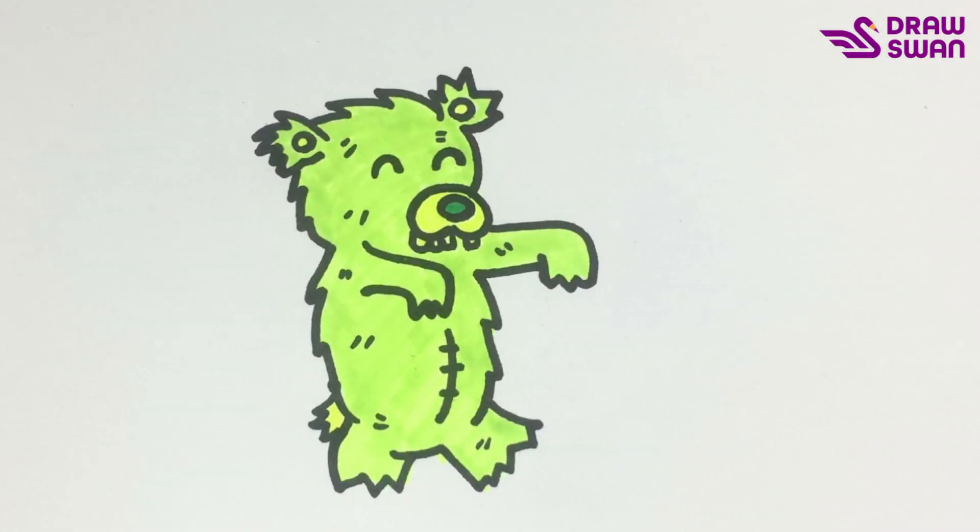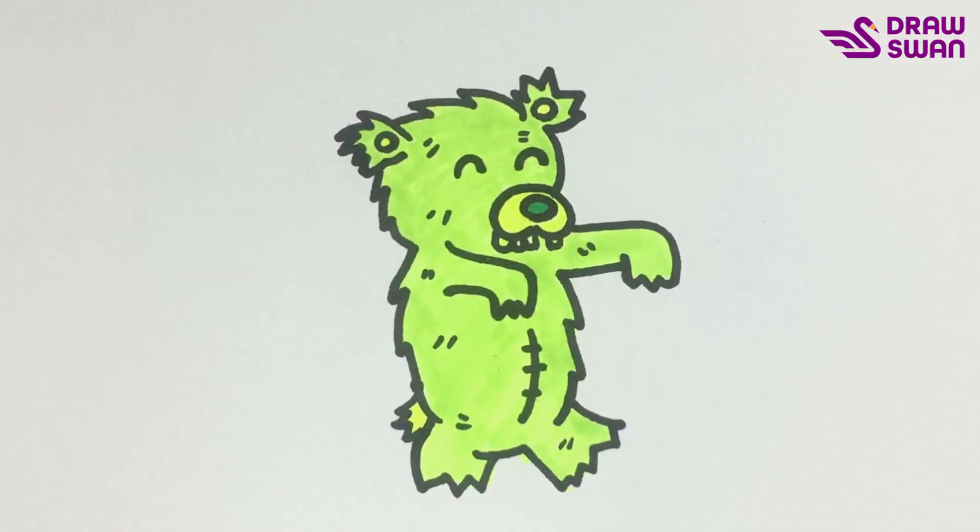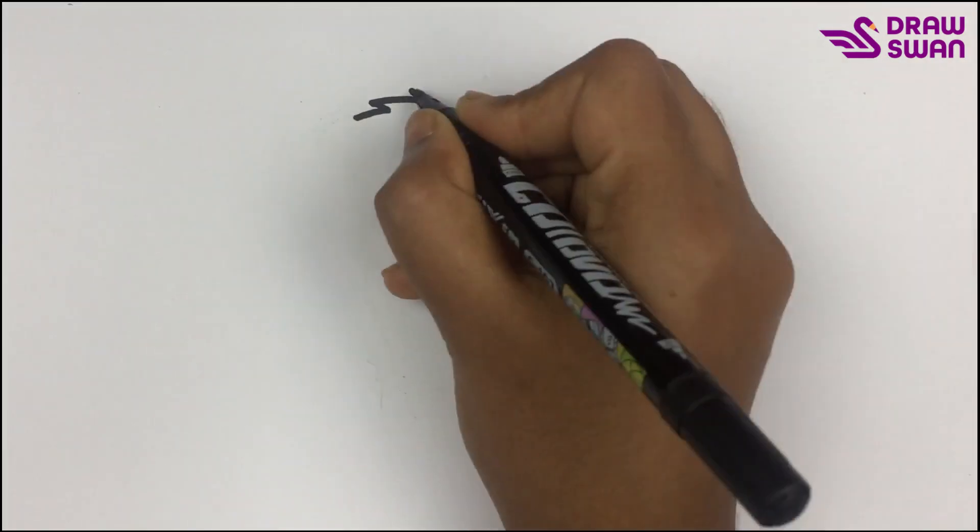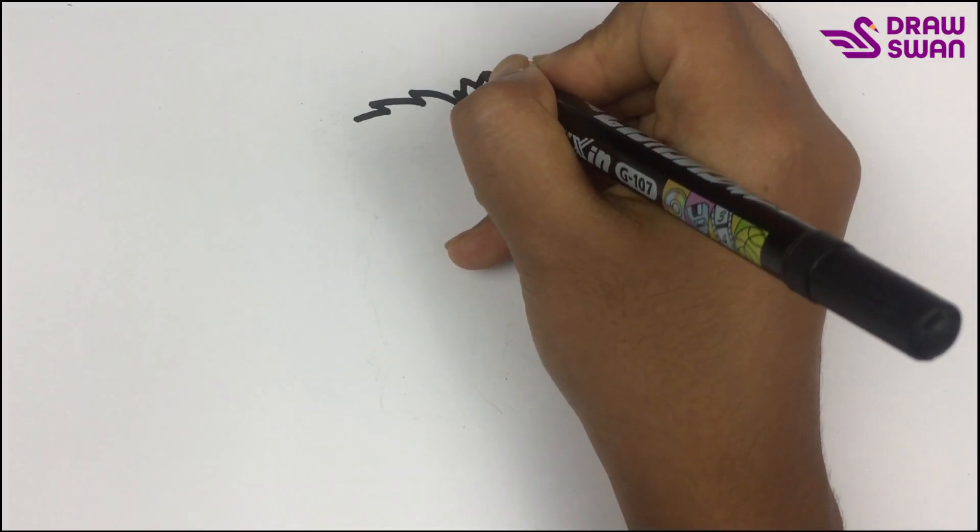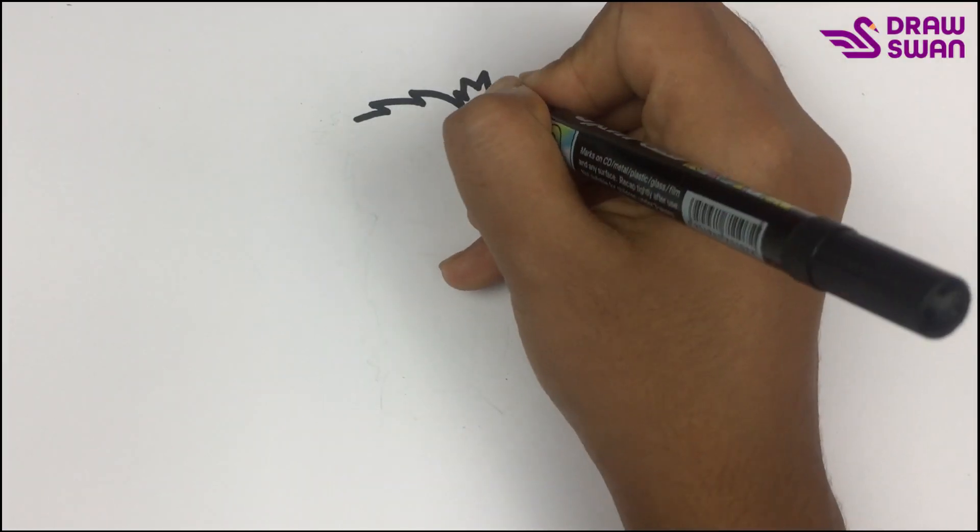Hi there, welcome to a drawing tutorial. Today we will see how to draw a zombie bear. You can see that I'm using my black pen. I'm starting with its head and its ear.